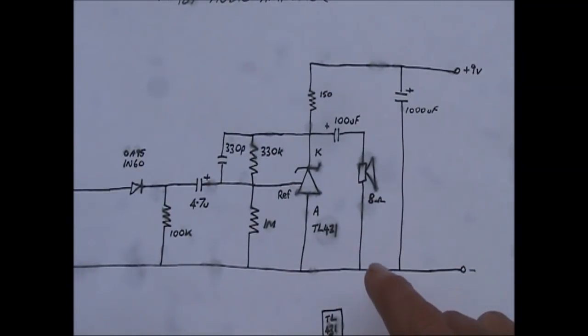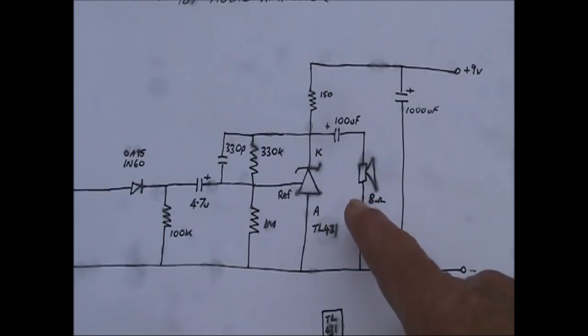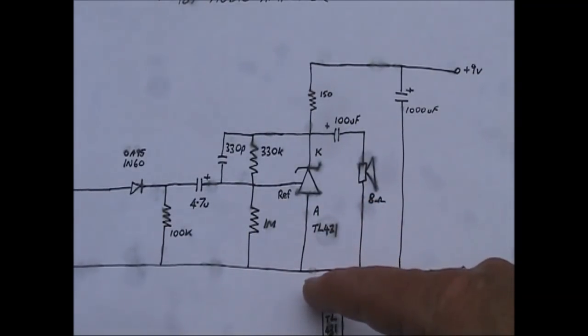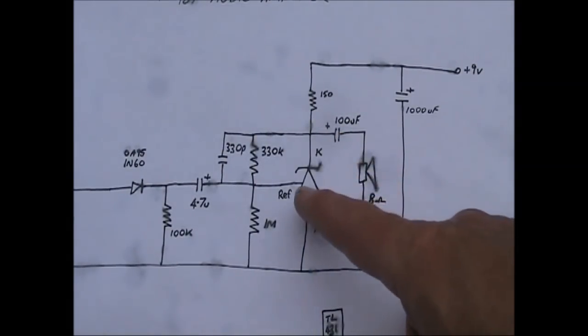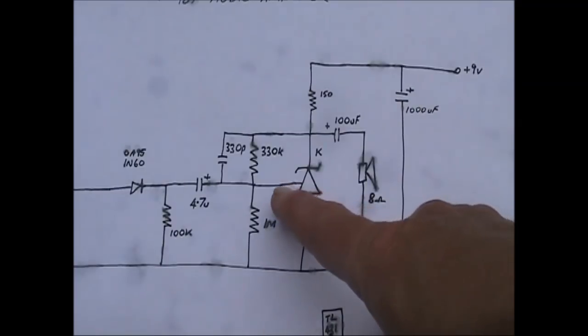An unusual thing about it, particularly if you are used to valve or tube circuits, is that the anode is connected to the negative or earth side, and the cathode to the positive side. The reference is a bit like a base, grid or gate. That's where you apply the audio coming in from the crystal set, or other signal source.